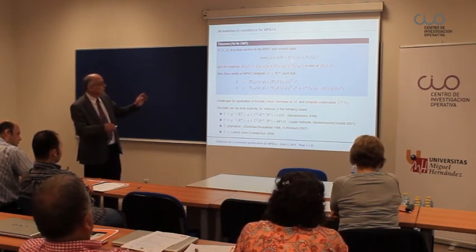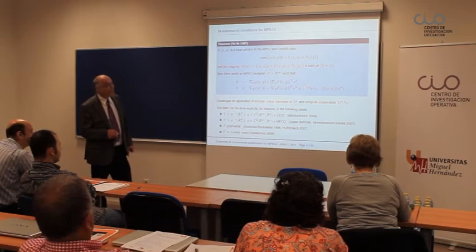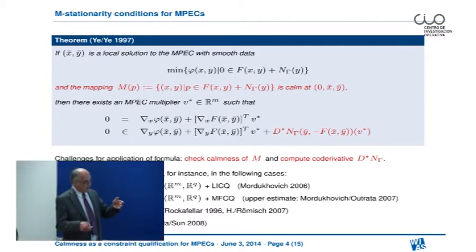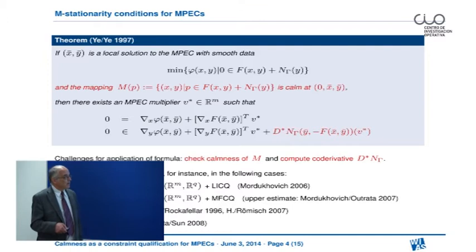Everything here is in terms of the original data. The only thing which looks a bit unusual is this co-derivative to the normal cone mapping to the set gamma. So if you want to derive stationary conditions for MPECs in this way, you are faced with two problems. First problem: check the calmness of this perturbation mapping. Second problem: compute the co-derivative and make it explicit in terms of the original data. I will not talk about this second part here; I just want to refer to certain well-known results where we have fully explicit formulas for this co-derivative.